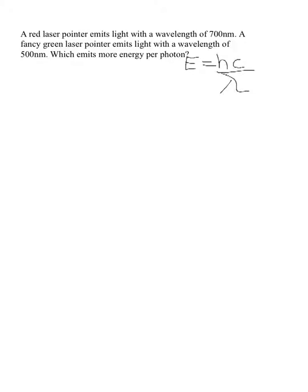So first, what equation are we going to use? We're going to use the energy equation, which is E equals hc over lambda. H is Planck's constant, which is equal to 6.626 times 10 to the negative 34 joule seconds.